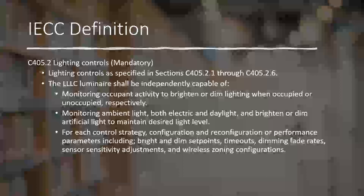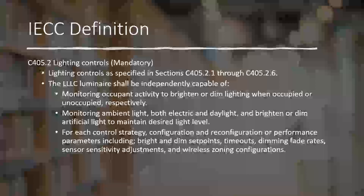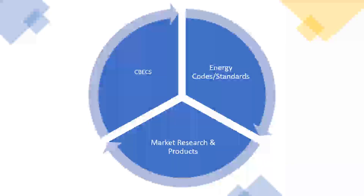Lighting controls specified in sections 405.2.1 to 405.2.6 must comply with all those sections — the manufacturer guarantees that it does and the product has the software capability of doing that. In addition, it shall be independently capable of allowing the occupant to override those controls and interact with the light on a demand basis. The cycle works like this: we have market research products, we use CBEX to evaluate them and determine where we're heading — whether we're using more or less energy — then energy codes and standards respond to correct or accelerate that trajectory, and then the market responds again.